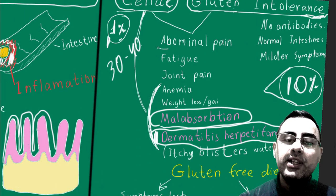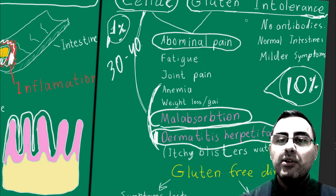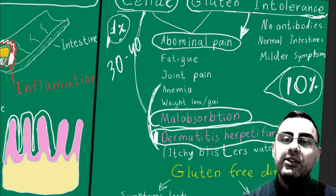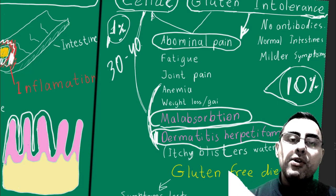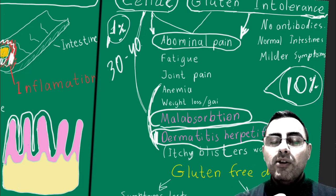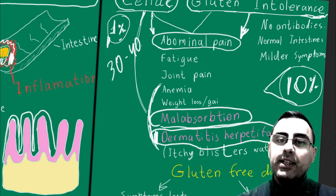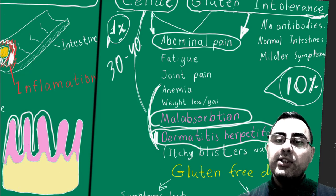Many may never know they have these diseases, yet they experience abdominal pain and discomfort. In gluten intolerance, abdominal pain can be more prominent after eating gluten-containing foods. But in celiac disease, symptoms can be more prominent and it can be difficult to correlate eating gluten-containing food with symptoms.